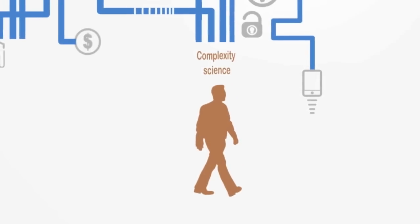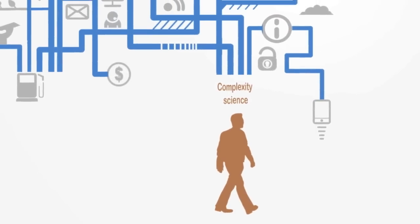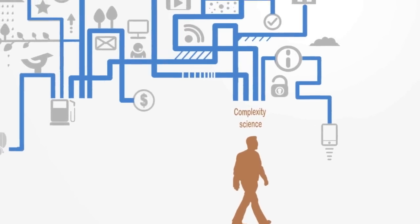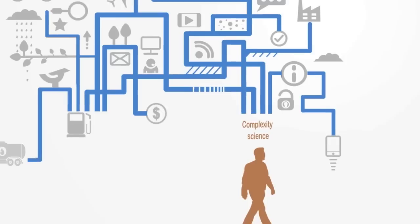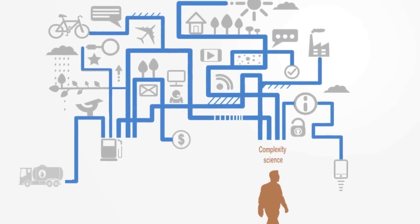This is where complexity science comes in, to provide us with an alternative scientific method better suited to researching these complex systems, supported by a paradigm that sees the world as a set of interconnected elements, whose interactions give rise to the patterns that we observe in the world around us.